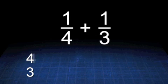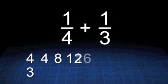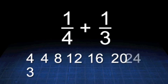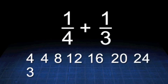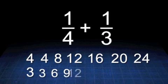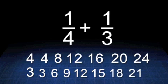The multiples of 4 are 4, 8, 12, 16, 20, 24, etc. The multiples of 3 are 3, 6, 9, 12, 15, 18, 21, 24, etc.